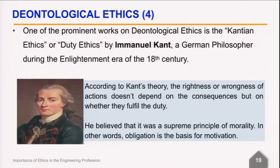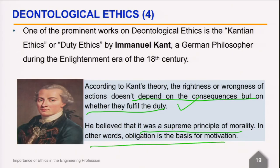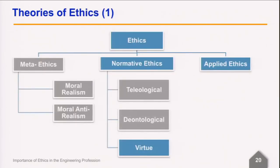These natural rights are popularly known today as human rights. From another perspective, Immanuel Kant, a German philosopher of the 18th century, held that the rightness or wrongness of actions does not depend on consequences but on whether they fulfill one's duty — the opposite of utilitarianism. He believed this was the supreme principle of morality; in other words, obligation is the basis for motivation.